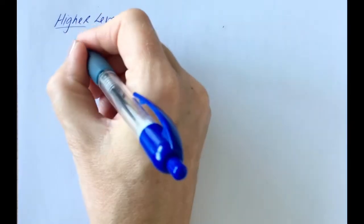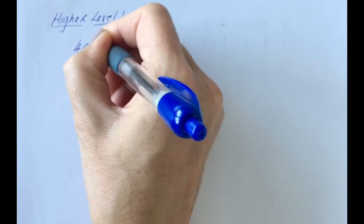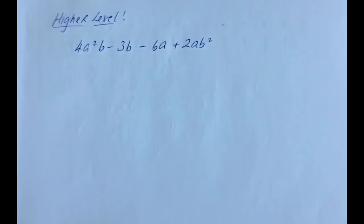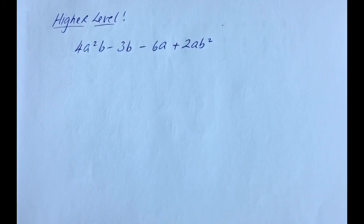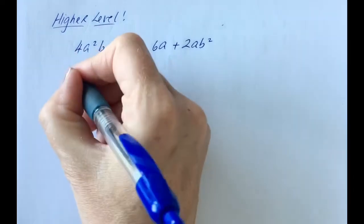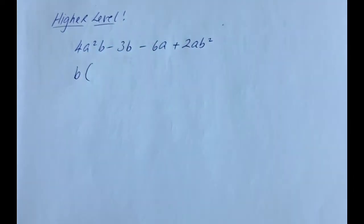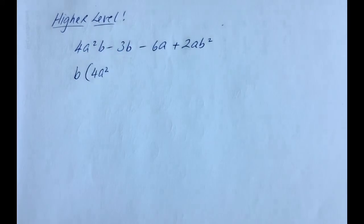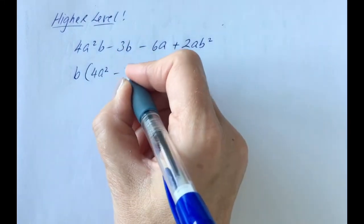Now let's look at some higher-level questions to show how this can get more complicated and what to watch out for. We're going to try: 4a squared b minus 3b minus 6a plus 2ab squared. Looking at 4a squared b minus 3b, the only thing common is b. Pull that out — to get 4a squared b back I need to multiply by 4a squared, and to get minus 3b back I need to multiply by minus 3.